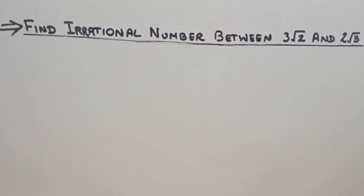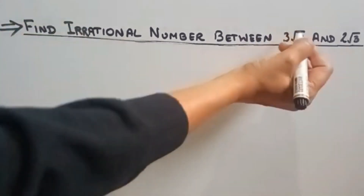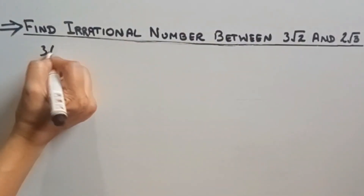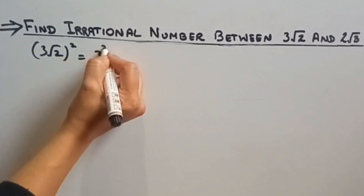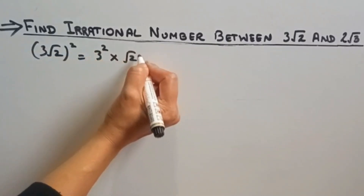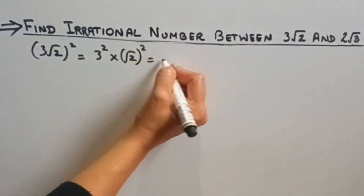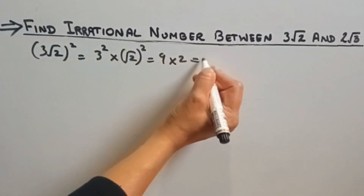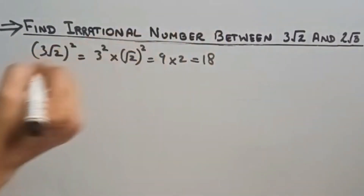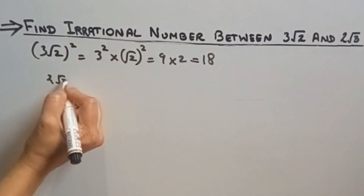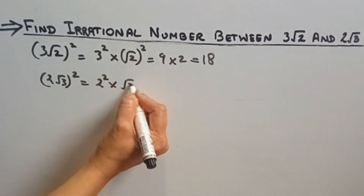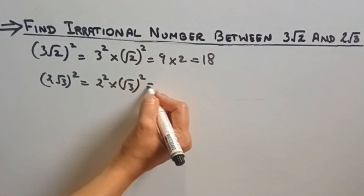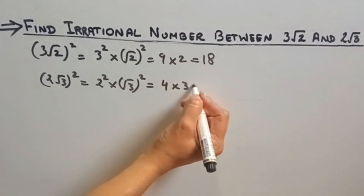Now we have to find an irrational number between 3 root 2 and 2 root 3. First we will take the square of 3 root 2: that is 3 squared into root 2 squared, which is 9 into 2, equal to 18. The square of 2 root 3 is 2 squared into root 3 squared, which is 4 into 3, equal to 12.